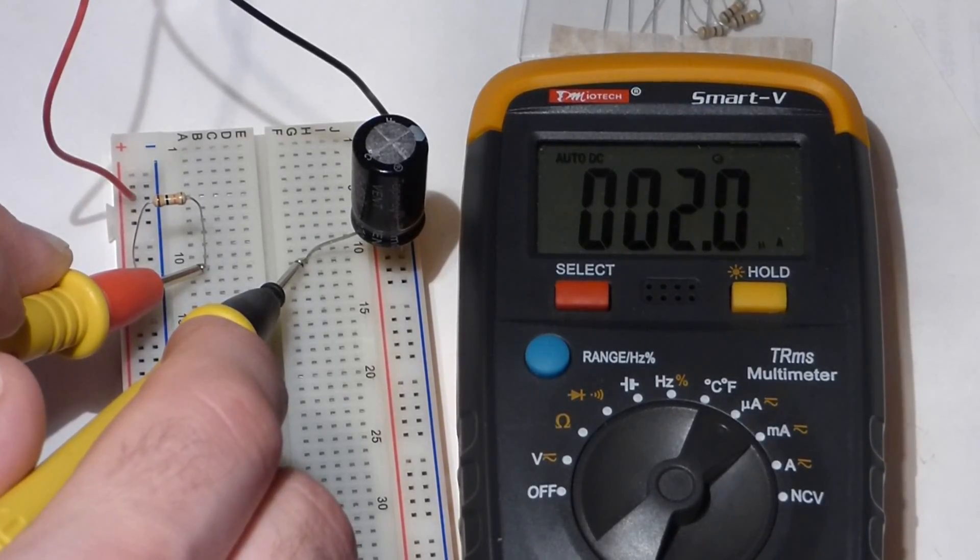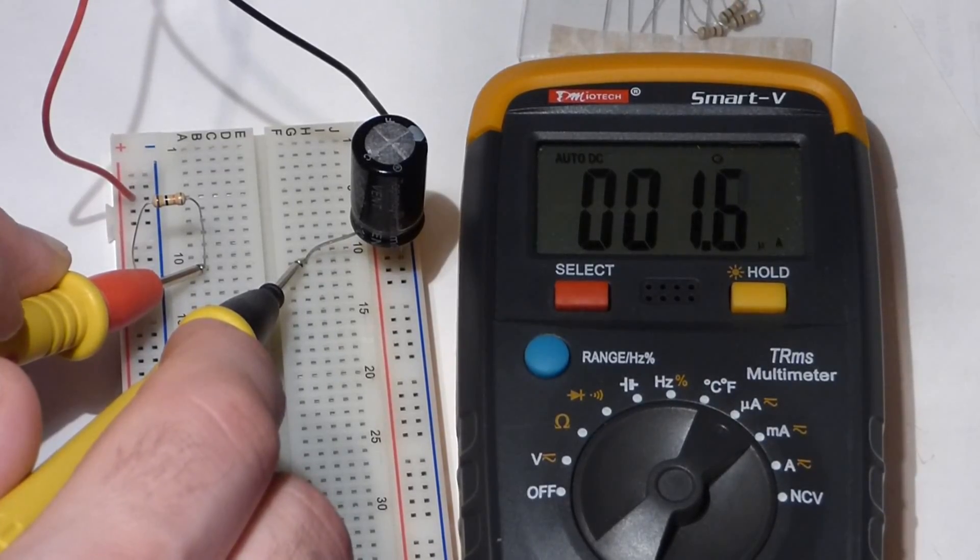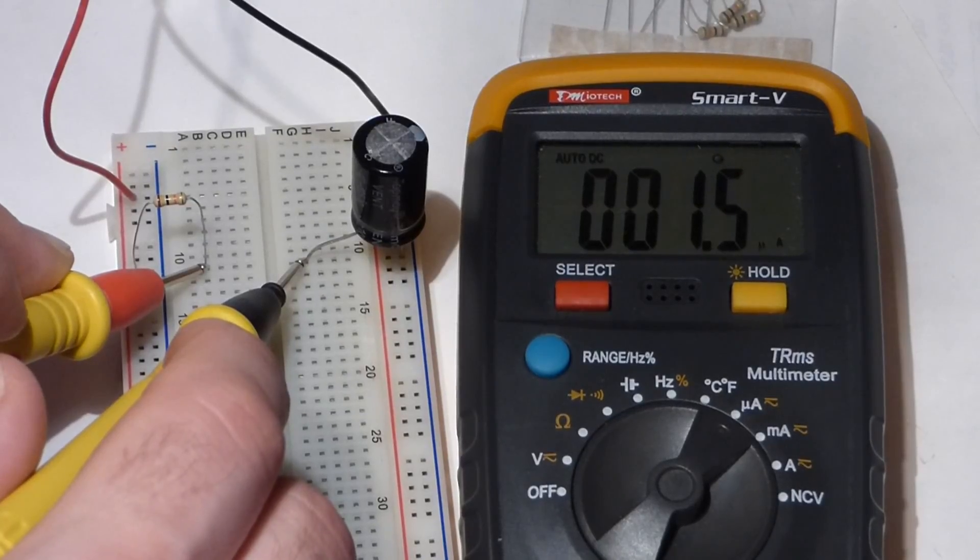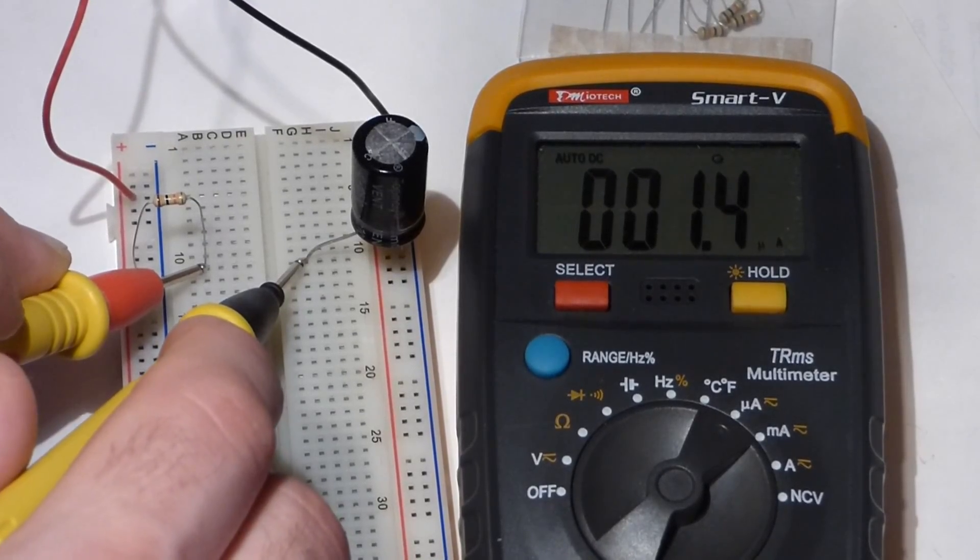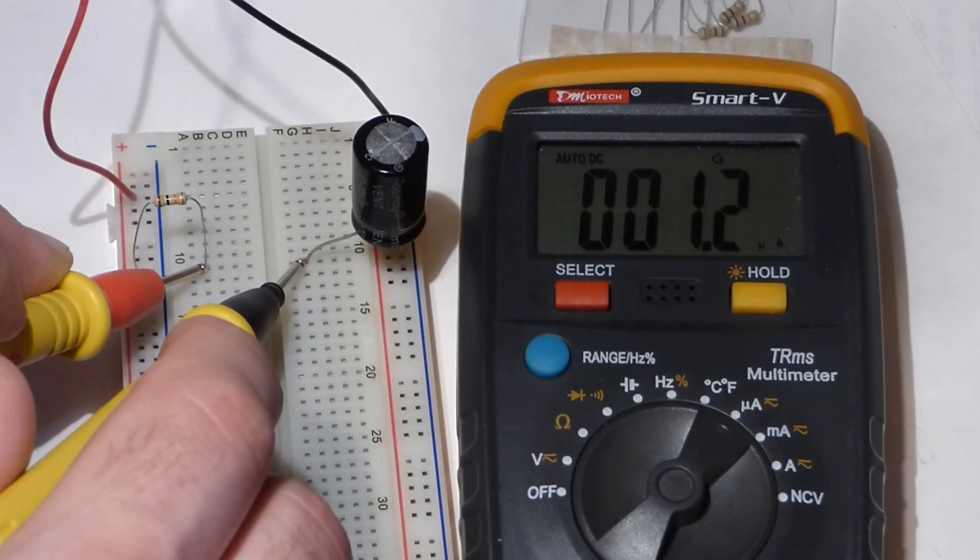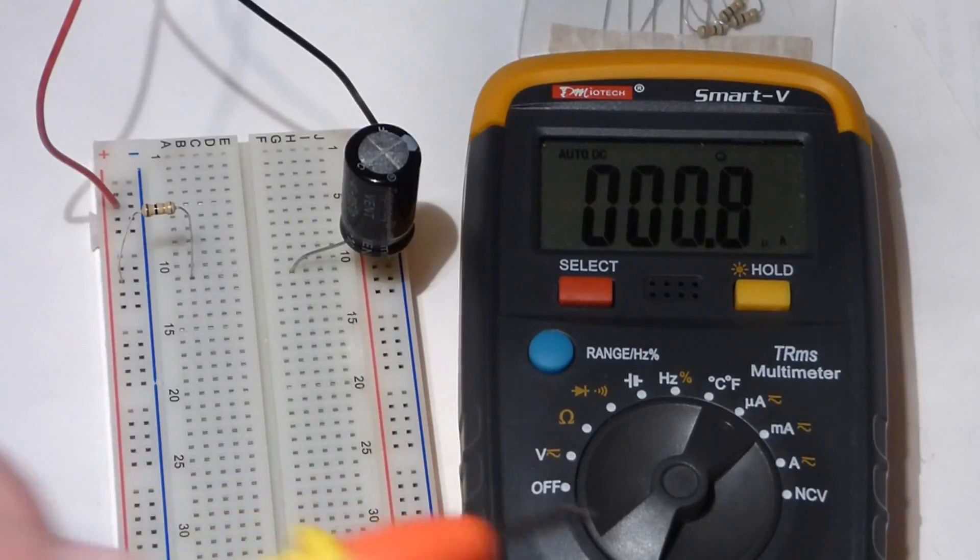So as you can see, now the current's not dropping very fast anymore. It's trickling into the capacitor and still filling up the capacitor. So ultimately, you get to the point when it stops accepting current. We've almost leveled off.